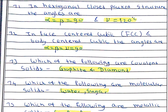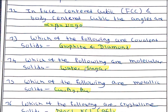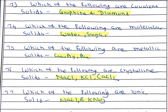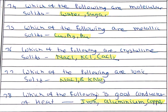Covalent solids include graphite and diamond. Molecular solids include water and sugar. Metallic solids include copper, gold, and silver. Crystalline solids include NaCl, KCl, and CaCl2. Ionic solids include NaCl and KNO3.